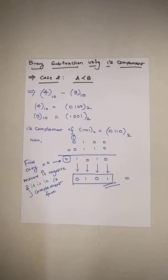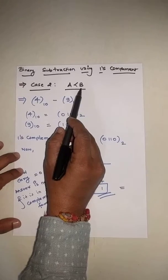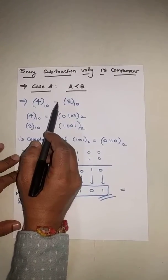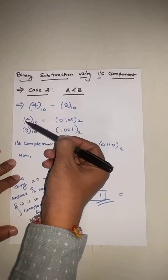Binary subtraction using one's complement. Second case will be A less than B, so first number less than second number. That is 4 minus 9. So first of all, write the binary of 4.